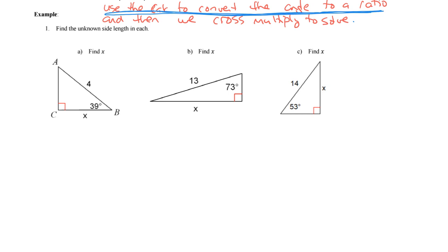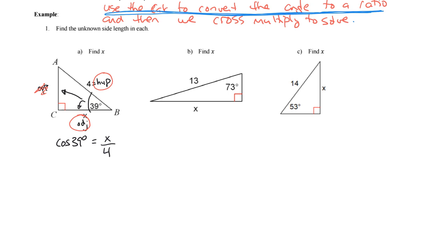Let's walk through the first question — find x. We focus on the given angle, which helps us label everything. The hypotenuse is always opposite the right angle. In this problem, x is the adjacent side and we know the hypotenuse. I don't know or care about the opposite side. The trig function that combines adjacent and hypotenuse is cosine, so cosine of 39° equals x over 4.